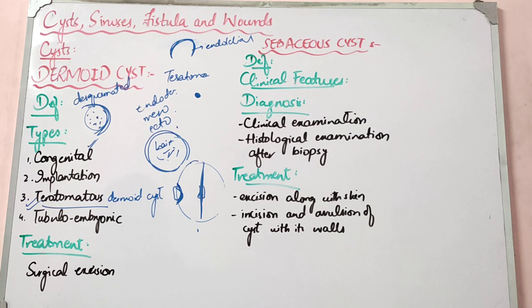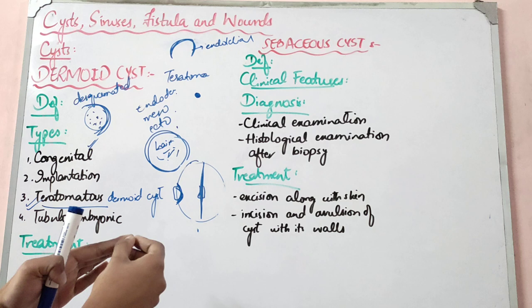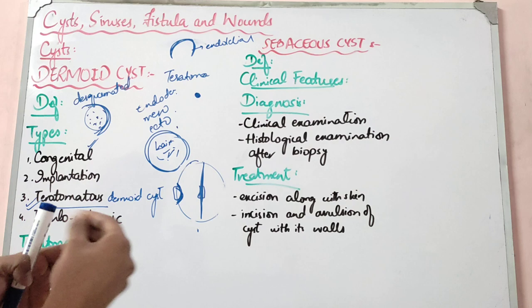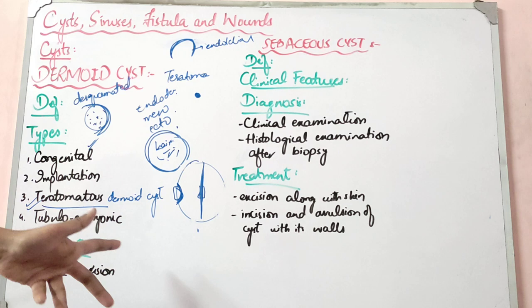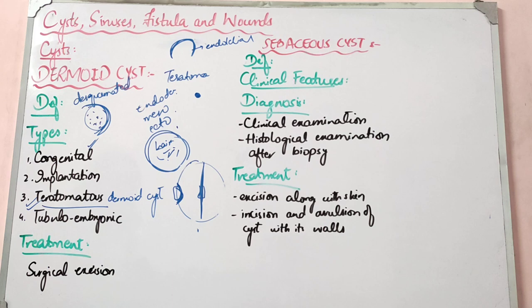Implantation cysts form when there is repeated trauma to the body's cells — a little trauma repeatedly. For example, in work involving repeated breakdown of skin, the skin cells are forced inside. When skin cells go inside, the skin breaks down and a cyst forms — this is called an implantation dermoid cyst. It occurs in people with repeated traumas, like females working more on their hands.